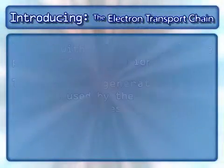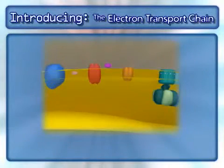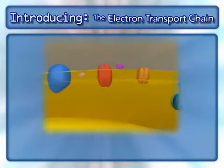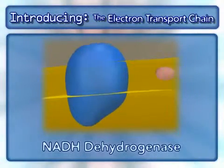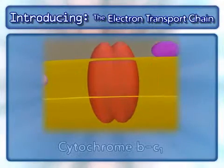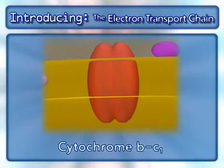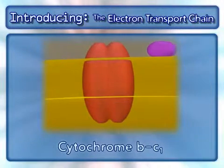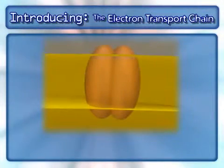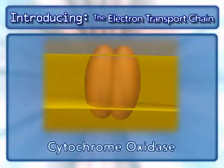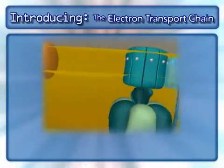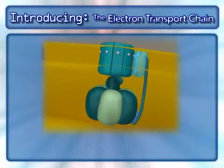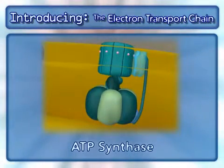The following complexes are found in the electron transport chain: NADH dehydrogenase, cytochrome BC1, cytochrome oxidase, and the complex that makes ATP — ATP synthase.